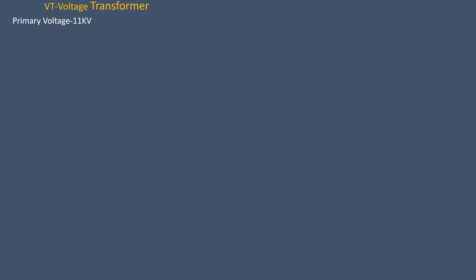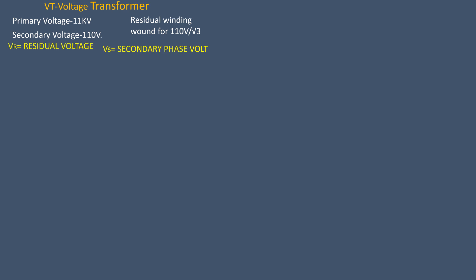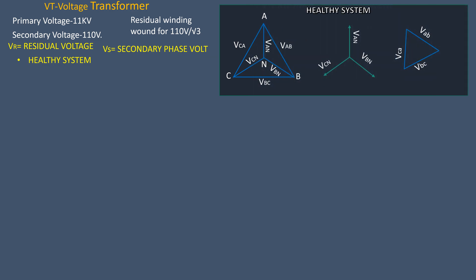Let us consider a VT with primary of 11 kV, a secondary of 110 volts, and a residual winding rated for 110/√3 volts, where Vr is the residual voltage and Vs is the secondary phase voltage. When the system is healthy, the three phase voltages are balanced; hence, the primary phase voltage is 11 kV/√3, the secondary phase voltage is 110/√3 volts, and the residual voltage is equal to 0.